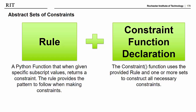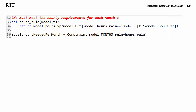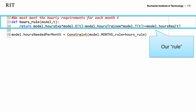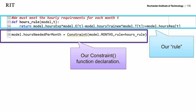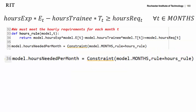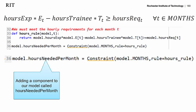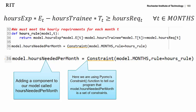So the first part was creating a rule. The second part of creating a set of constraints is to use the constraint function, and we're going to pass it our rule so it will make these constraints for us. We're going to look more closely at our constraint function declaration, which basically matches up our rule and a set so that specific instances of constraints can be written. We're first adding a component to our model called hours_needed_per_month, and we're using Pyomo's constraint function — basically telling our program that model.hours_needed_per_month is going to be a set of constraints.